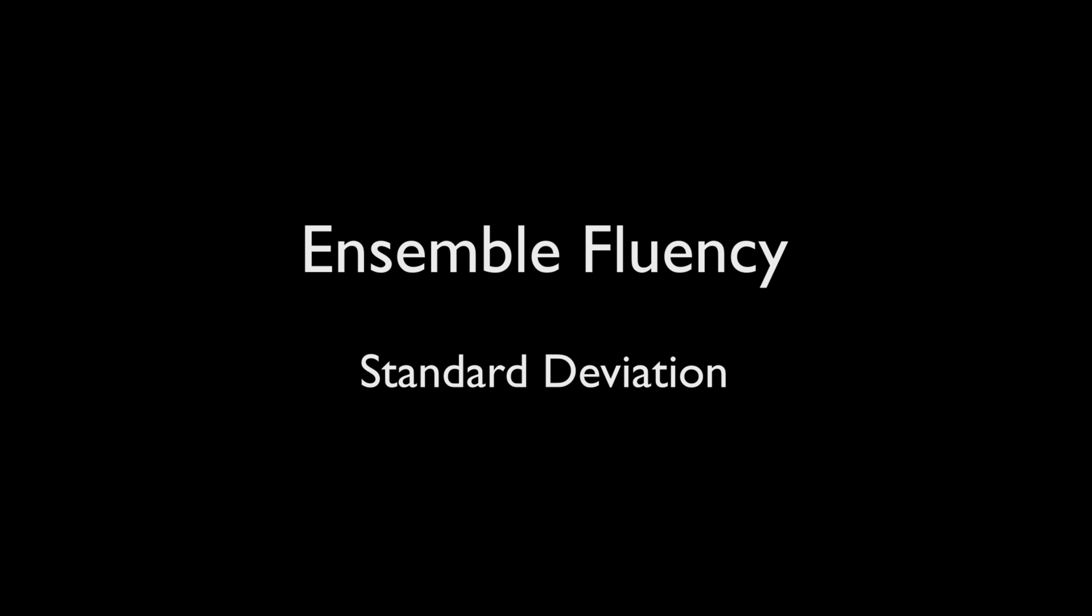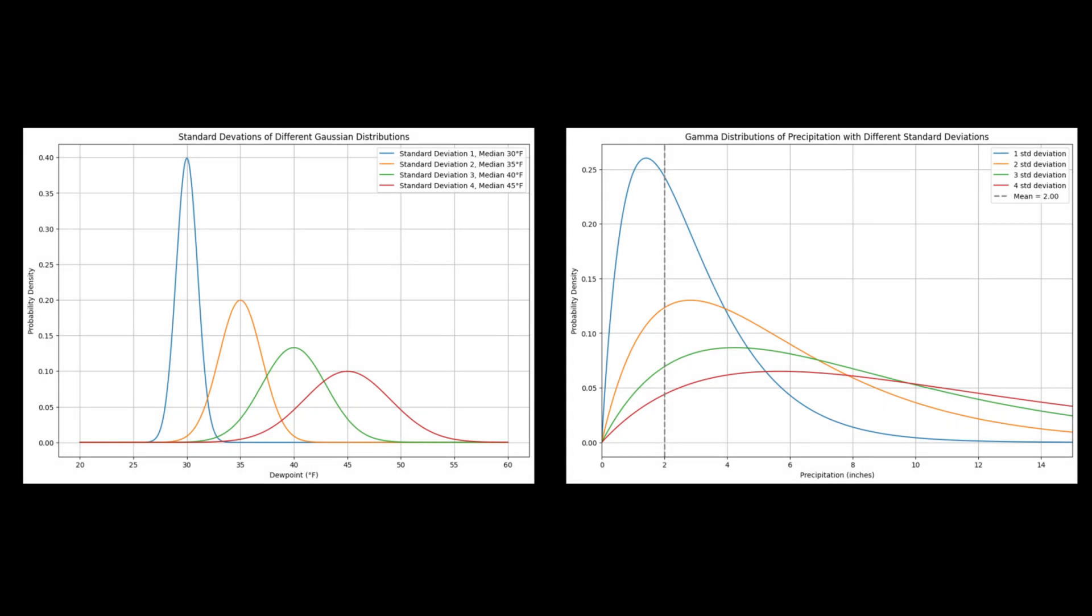In both Gaussian and gamma distributions, we can compute what is called standard deviation. The standard deviation is the average amount of variability within the data. It tells you how far each value lies from the mean. Any calculation of standard deviation will have the same units as the data itself.